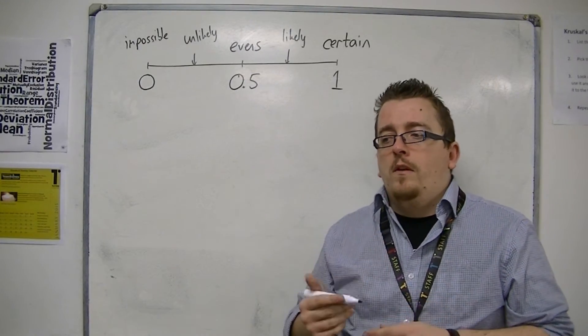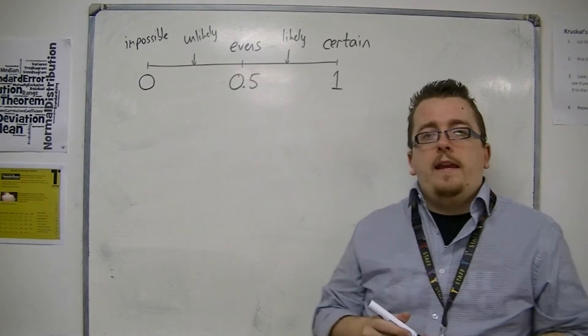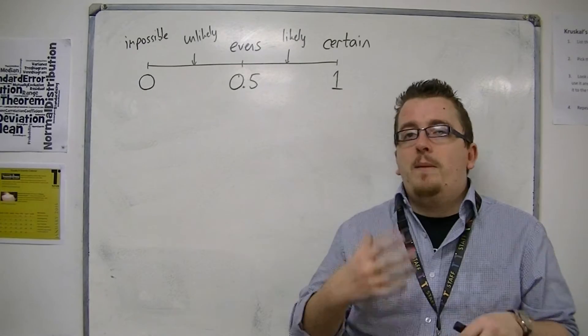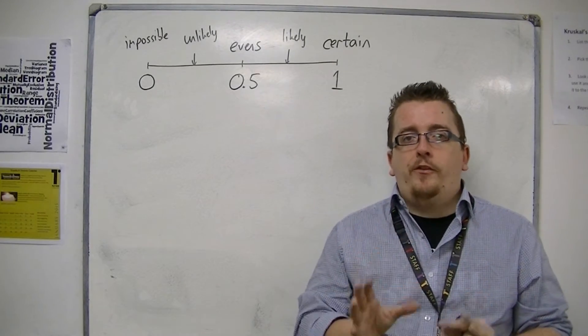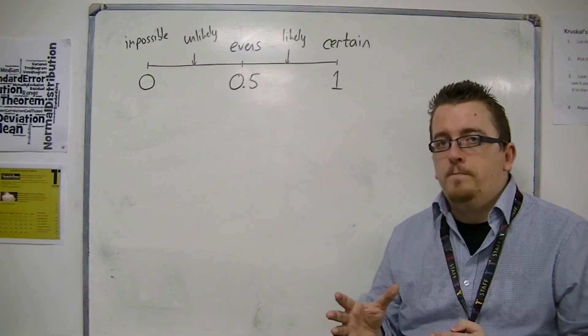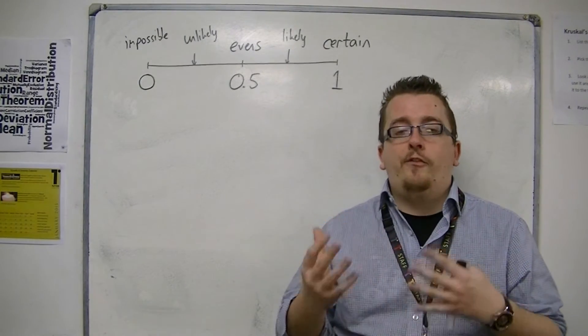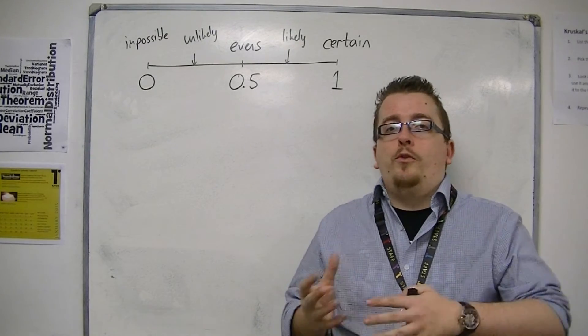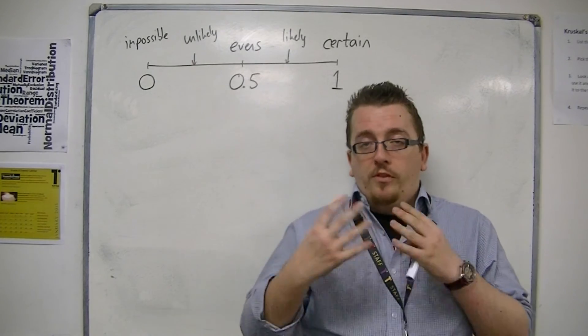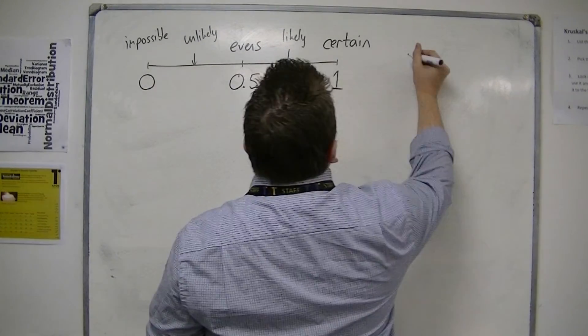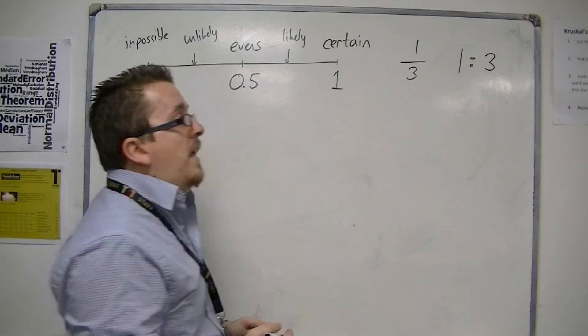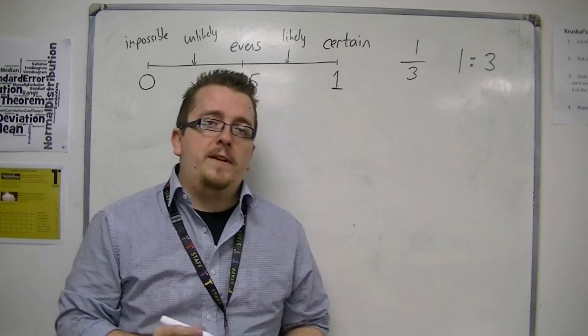One thing that we're not going to be looking at is really ratios in any great detail. And some people at this point start to get confused between ratios and probability in fractions. Especially with the ideas of horse racing. So if a horse is 3 to 1, and things like that, and gambling. And people think that a probability of 1/3 can start to be written as 1 to 3. And these things are not the same.